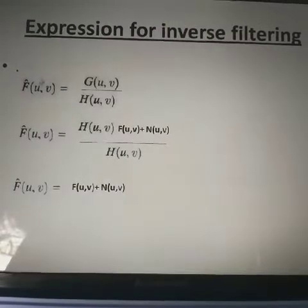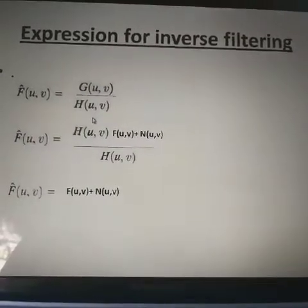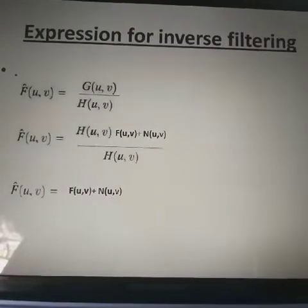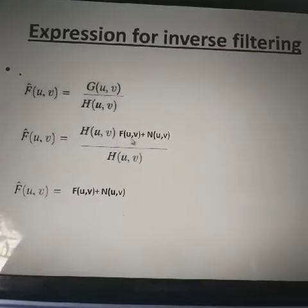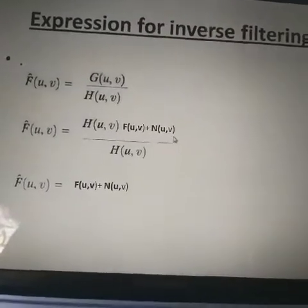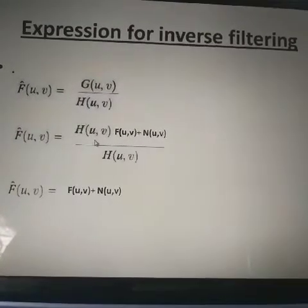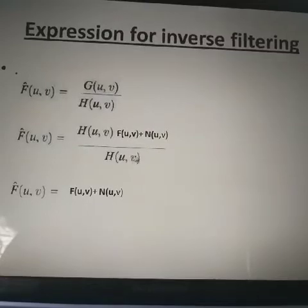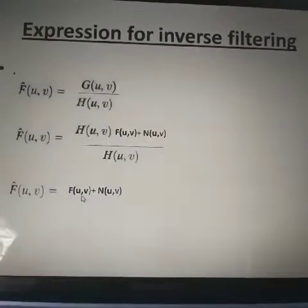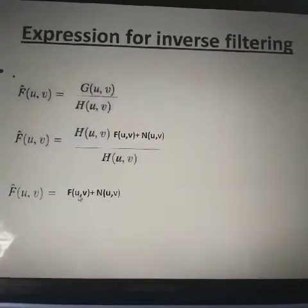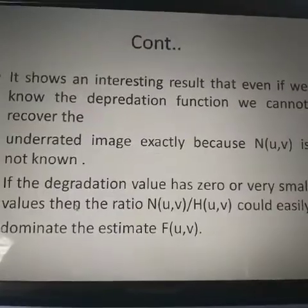The expression used for inverse filtering is: F̂(u,v), which represents the estimated enhanced image, equals G(u,v) divided by H(u,v). Substituting G(u,v) = H(u,v)·F(u,v) + N(u,v), the H(u,v) terms cancel, giving us F(u,v) + N(u,v)/H(u,v) — the original image plus a noise term. This shows how noise is handled in the inverse filtering process.